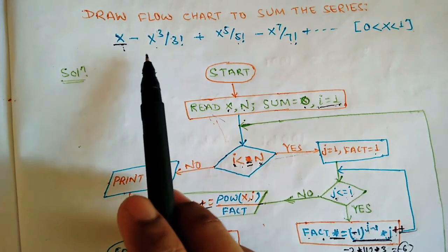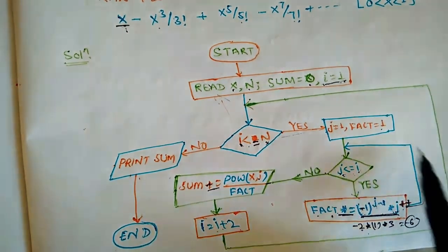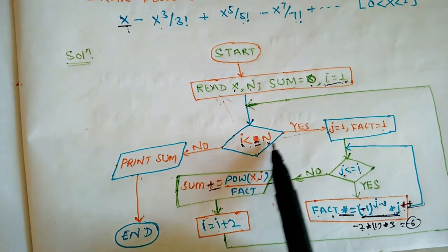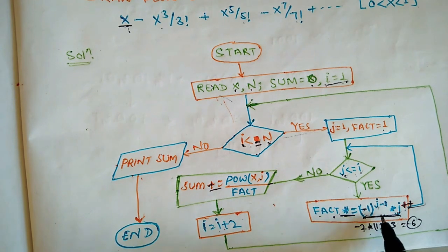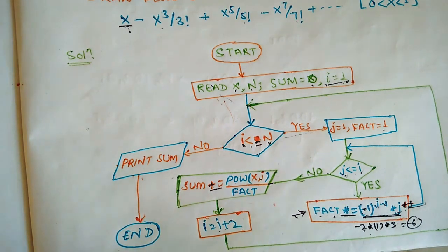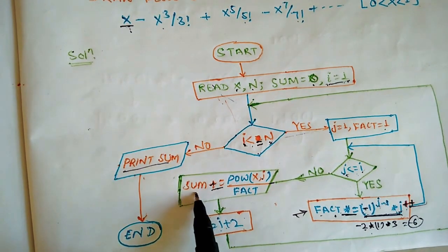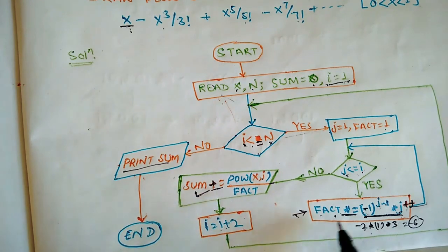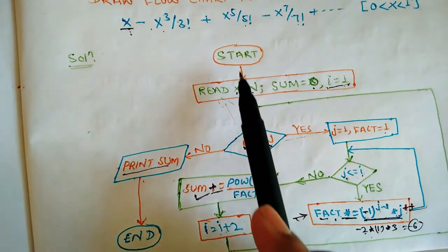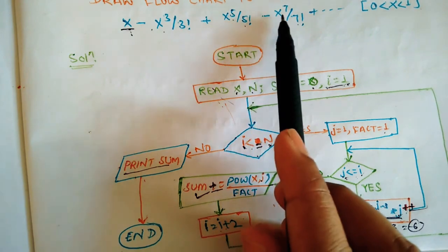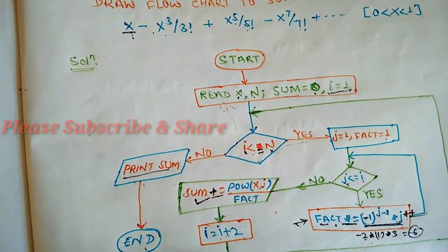The i value goes 1, then 3, then 5 — incrementing by 2 each time: i = i + 2. Then we check the condition again: i less than or equal to n. This loop is how we alternate plus and minus signs. When the condition becomes false, we display and print the sum value.